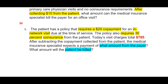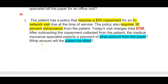For number 5, the patient has a policy that requires a $20 copayment for an in-network visit due at the time of service. The policy also requires 30% coinsurance from the patient. Today's visit charges total $785. After subtracting the copayment collected from the patient, the medical insurance specialist expects a payment of what amount from the payer and what amount from the patient? Again, this is two questions. We start with the fact that the patient has paid their $20 copay.